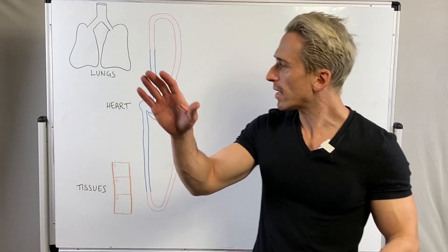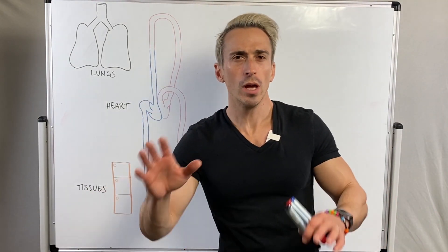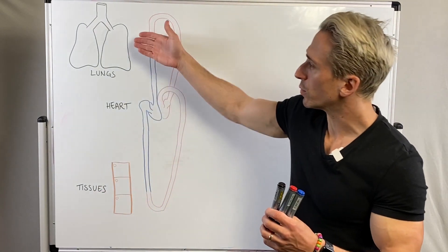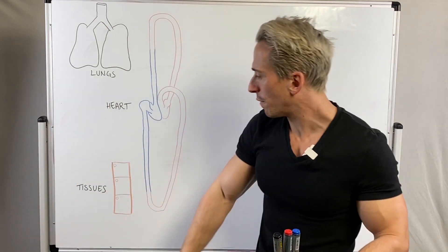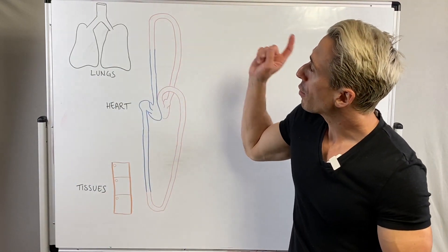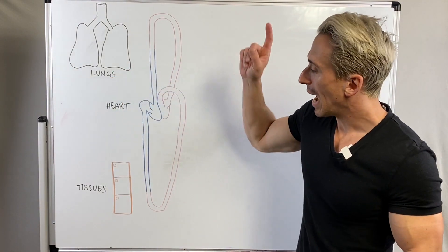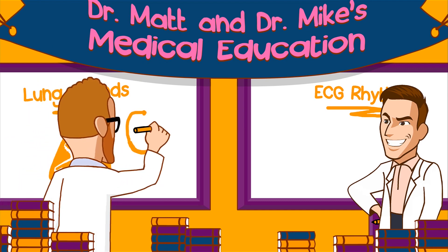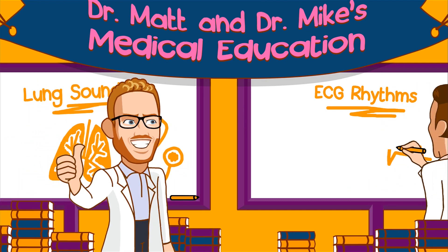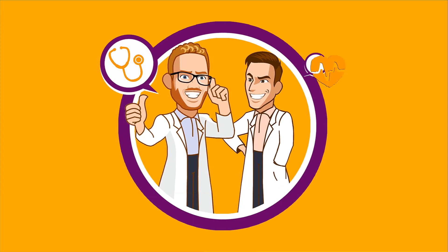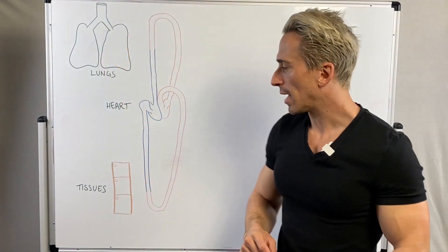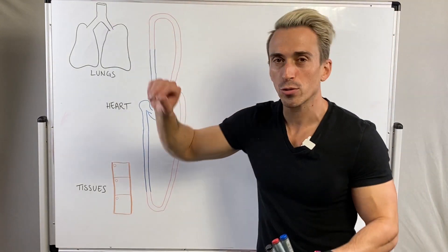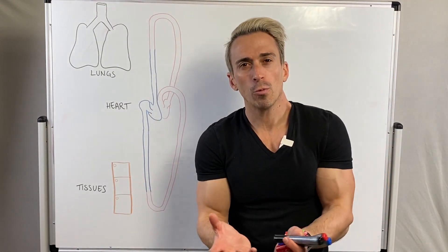Hi everybody, Dr. Mike here. In this video we're going to take a look at gas transport — the movement of oxygen and carbon dioxide around the body — picking up oxygen at the lungs and dropping it off at the tissues. What we need to start with when we look at gas transport is simply the fact that the circulatory system, the respiratory system, and the tissues of the body are intimately related.